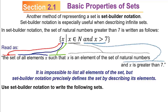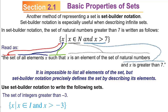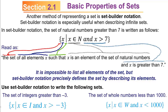Let's use set builder notation to write the following sets. The set of integers greater than negative 3: you write x with the symbol for 'is an element of,' then capital I for integers, so x is an element of the integers and x is greater than negative 3. Another one: the set of whole numbers less than 1,000. You write an opening brace, x, vertical line — the set of all x such that x is an element of W (whole numbers) and x is less than 1,000. Practice makes perfect here.